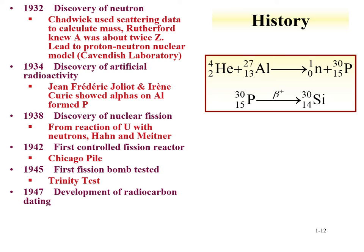In 1942, Enrico Fermi and others made the first fission reactor at the University of Chicago — called the Chicago Pile. In 1945 was the Trinity test, where the first plutonium device was tested. And in 1947, radiocarbon dating was explored as a way of dating material.